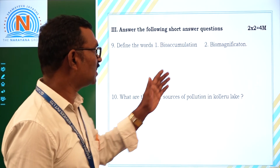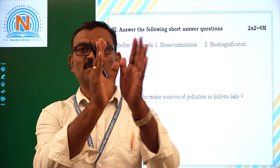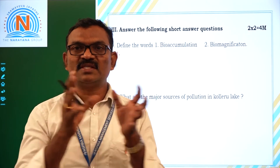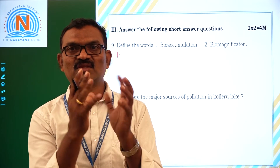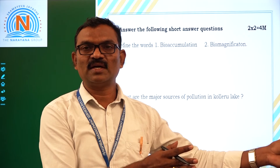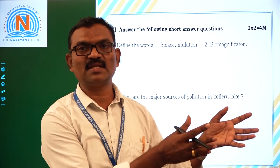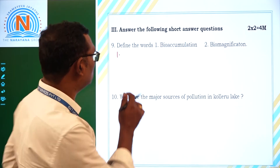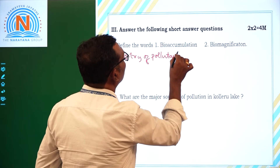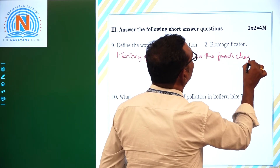Define the words bioaccumulation and biomagnification. Bioaccumulation means the entry of pollutants into the food chain. For example, chemical wastes released from industries enter the water, and aquatic organisms that use that water take in those toxic materials. The entry of pollutants into the food chain is called bioaccumulation.